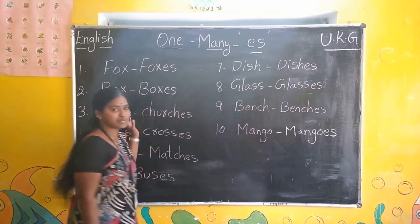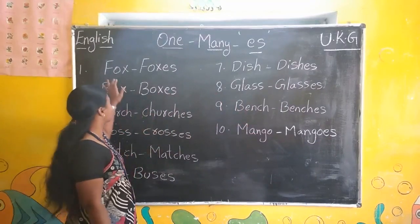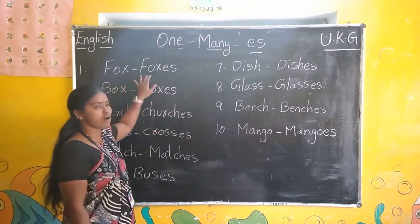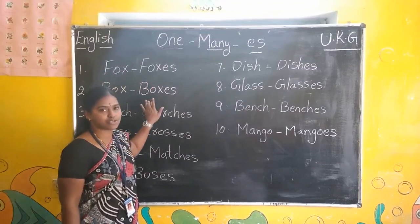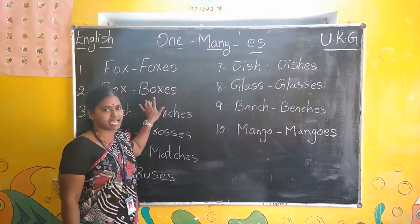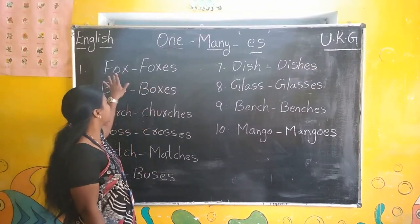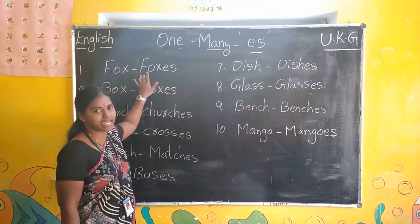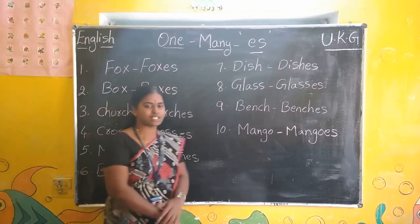You have to learn spellings also, children. Don't read fox, boxes — you are reading like that. Don't read like that. You have to learn with spellings. Practice well.